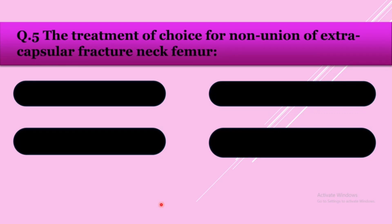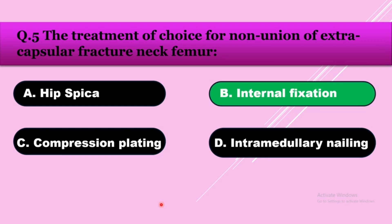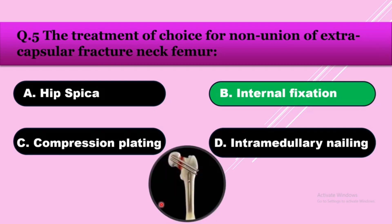Question number five: The treatment of choice for non-union extracapsular fracture neck of femur — option A: hip spica, option B: internal fixation, option C: compression plating, option D: intramedullary nailing. The answer is internal fixation. In extracapsular non-union fracture, union chances are low, so internal fixation is done using screws, nails, and dynamic hip screws.